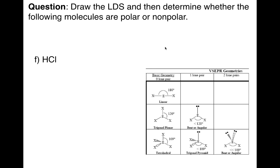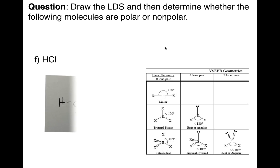Next: HCl. This only has two atoms, so I can't use my chart — I have to think about this as a game of tug-of-war. You have chlorine, which is electronegative and has all these electrons, pulling strongly, whereas hydrogen has fewer electrons. So HCl is an example of a very simple polar molecule. If there are only two elements, it's not on your chart — you have to think about it.